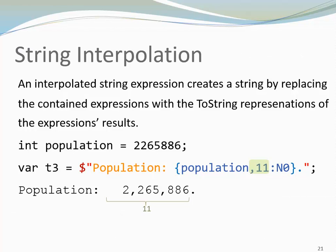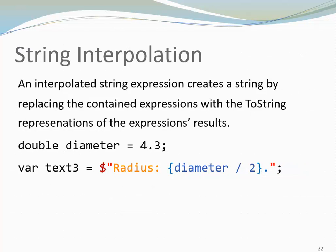So far we looked at interpolation strings that included variables and some formatting. Instead of variables, we could also use expressions. Here is an example where we have a variable diameter and we want to create a string that shows the value of the radius. We can do that by placing the expression diameter divided by 2 between the curly braces. And when we print text3, we'll see that the radius is 2.15. Here we go.